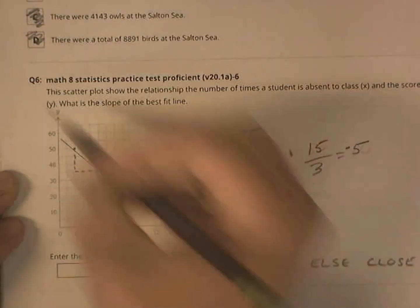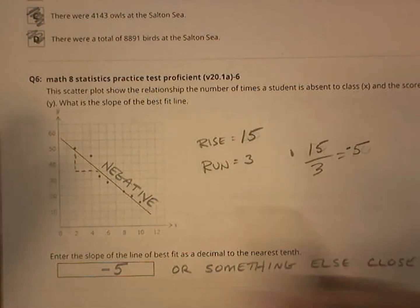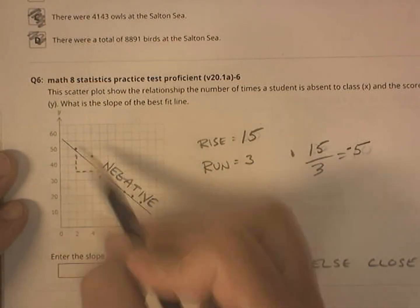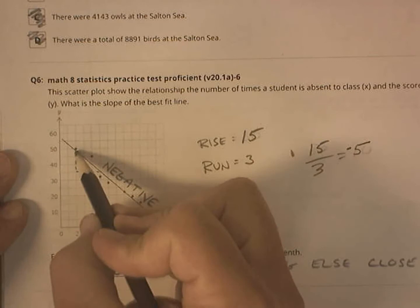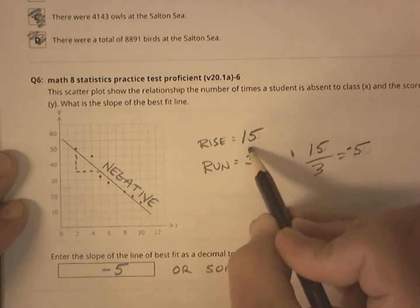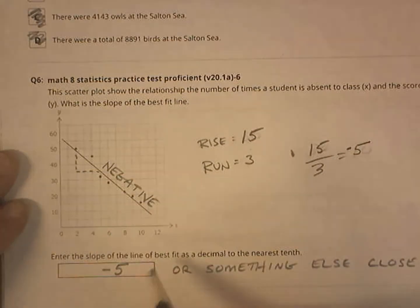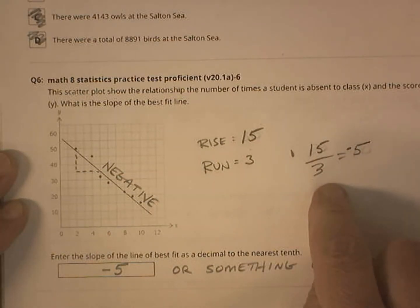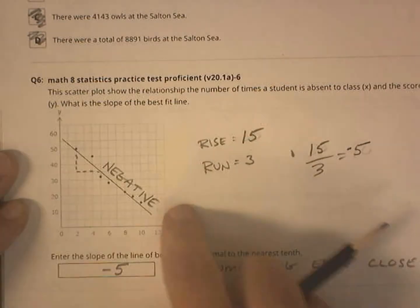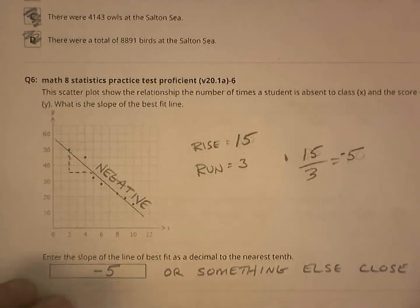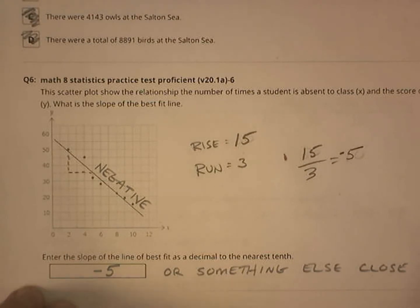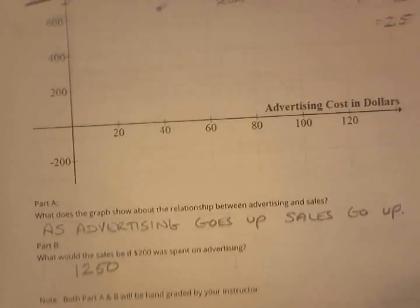All right. I've got this scatter plot with the best fit line. I want to know the slope of it. Well, I found two good points. I found my rise, which is 5, 10, 15. My run is 1, 2, 3. I really had to look at the scale out there. So it's 15 over 3. It's 5, but it's negative, so it's negative 5. Or something else close. I would also accept something like negative 4.9, negative 5.1. It's a scatter plot. You're going to get close.